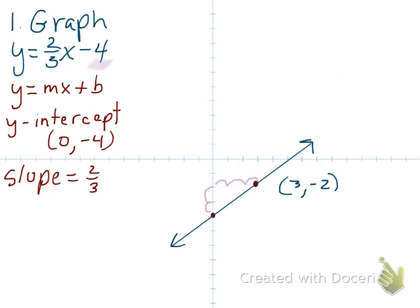Any point on this graph is actually a solution to the equation y equals 2 thirds x minus 4. If you plug in the x and y value from any point on this graph, it will make that equation true.